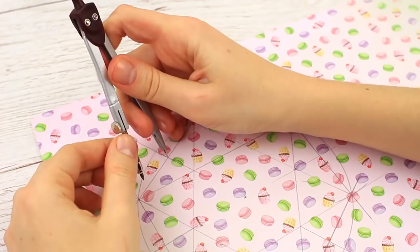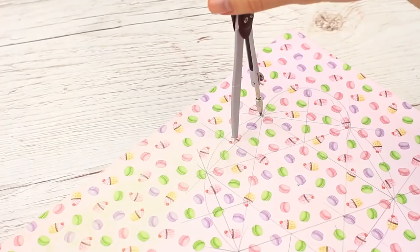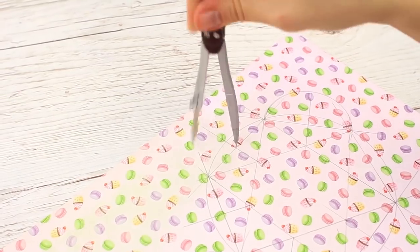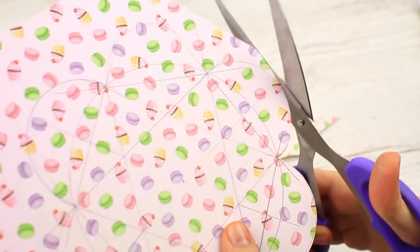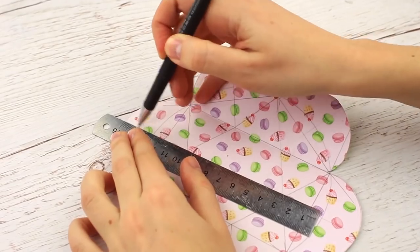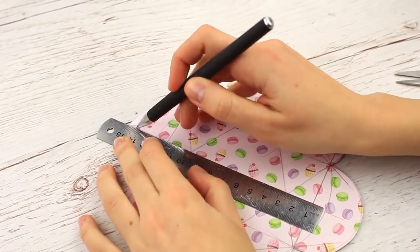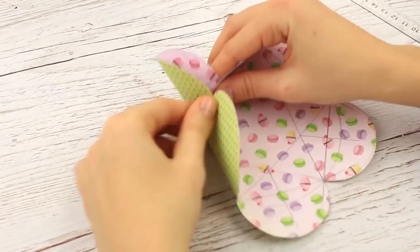Then draw the lines directed to the center. Set the compasses into the intersection and draw a semi-circle. Repeat on each side. Cut out carefully. We should get a 6-petal flower. Fold up each 2 petals. Score the middle of each petal to fold it in half. Crease each folding line.